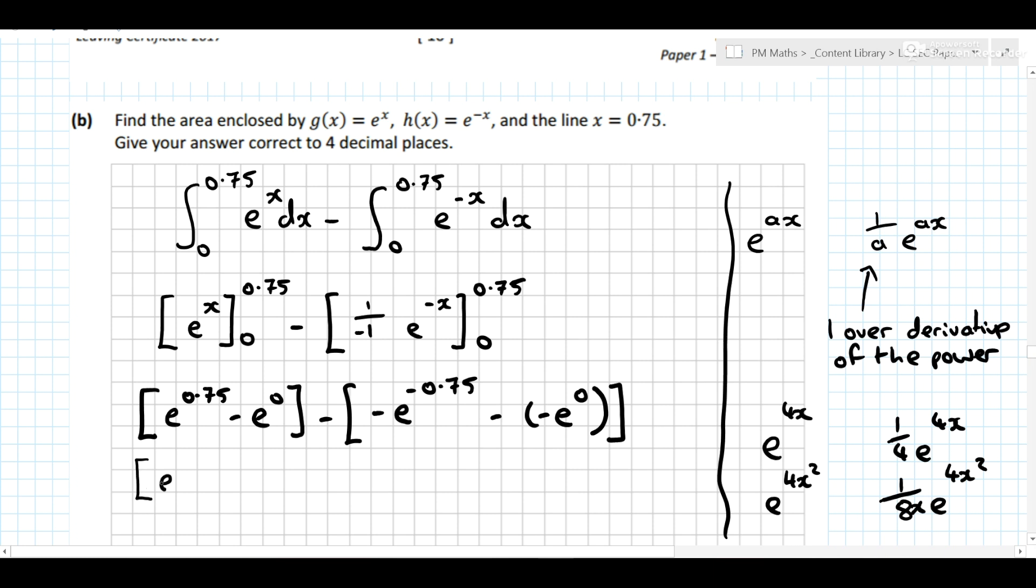e^0.75 minus 1, because anything to the power of 0 is 1, plus e^(-0.75).